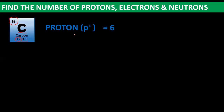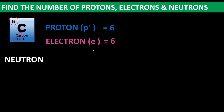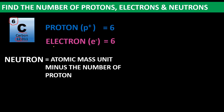Next, electrons: electrons is equal to the number of protons, so carbon also has 6 electrons. How about neutrons? The formula is atomic mass minus the number of protons. The atomic mass of carbon is 12 and the number of protons is 6. So neutrons = 12 minus 6 = 6.